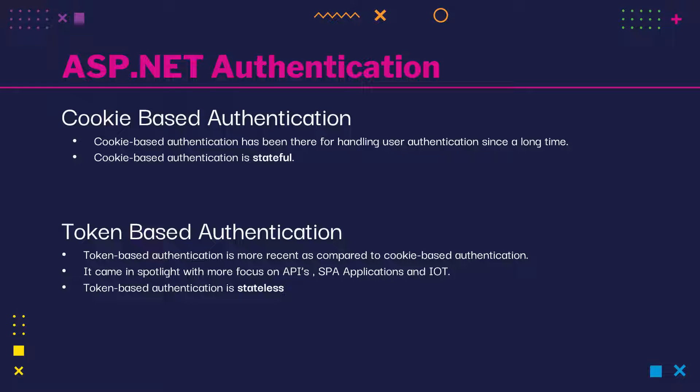Cookie based authentication is typically used when you have a username and password on your website. An example of token based authentication is when you have external login for authentication — for instance, when you use Google or Facebook to log in. In this case, we do not enter Facebook's password on our website. Rather, we are redirected to Facebook where we enter the username and password. Once Facebook validates your identity, they redirect you back to the website with a token, so the responsibility of authentication lies on the shoulder of Facebook.